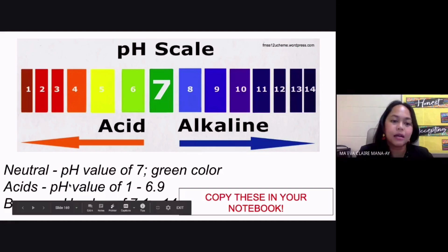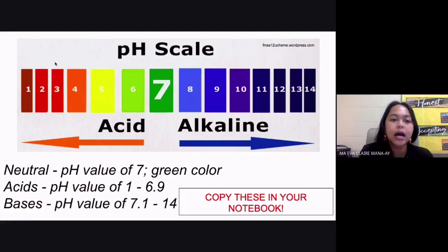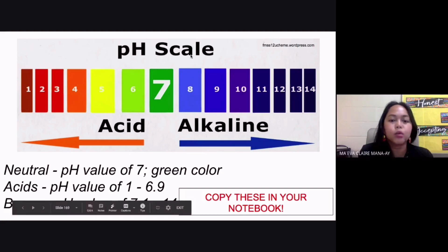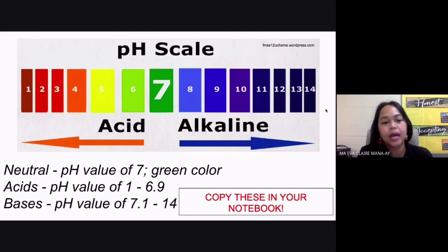If your substance is an acid, your pH value would be from one until 6.9. So from seven going down, those are your acidic substances. Now your bases will be from 7.1 going up towards 14. So pH value of 7.1 towards 14, that would be your bases. This is your pH scale.